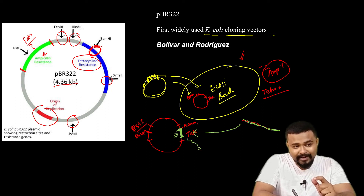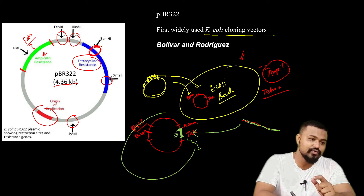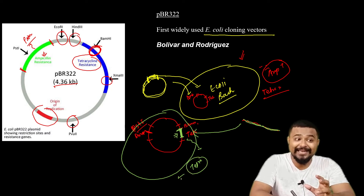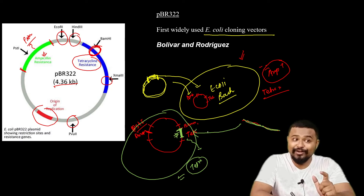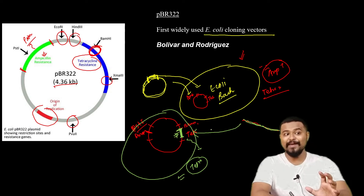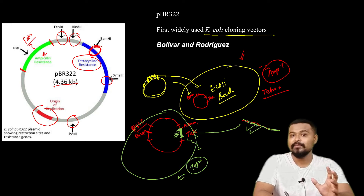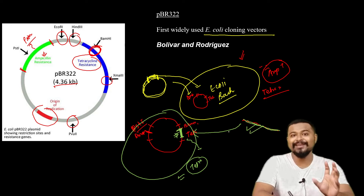If a bacteria carries the intact plasmid, it will be tetracycline resistant. However, if the gene of interest is inserted into the tetracycline resistance gene, this results in a recombinant DNA — and the bacteria will no longer be tetracycline resistant.